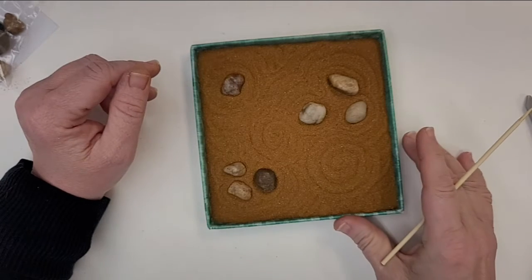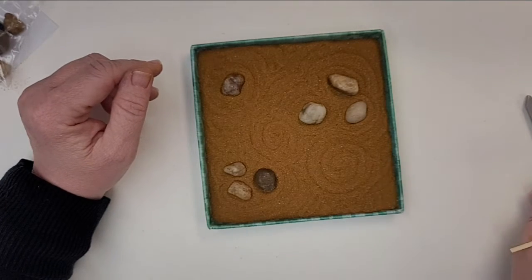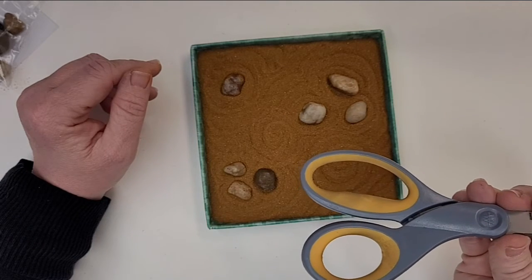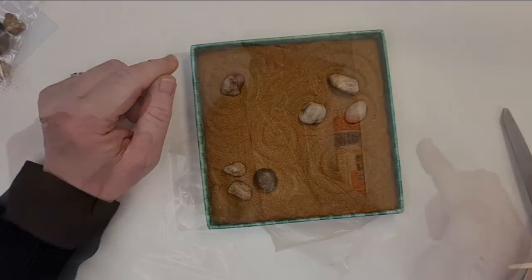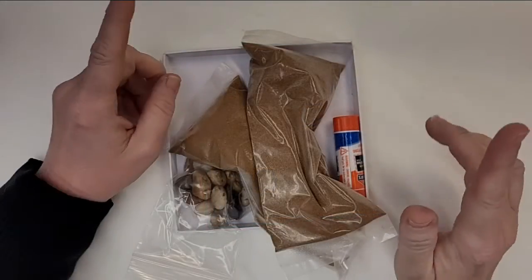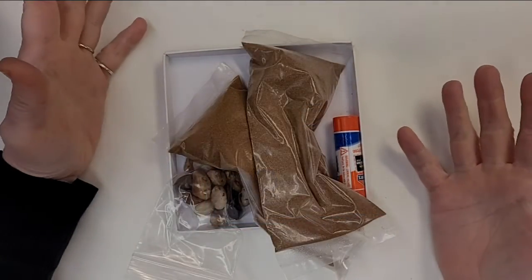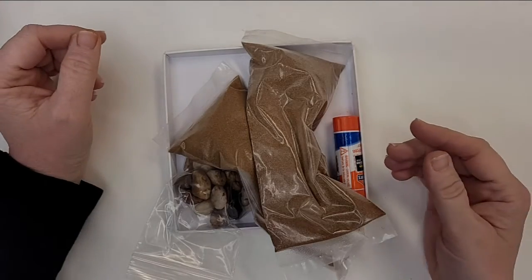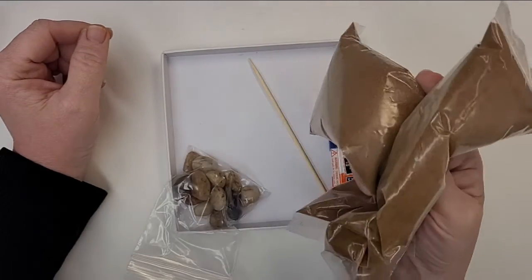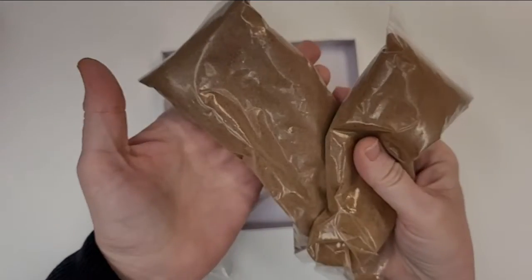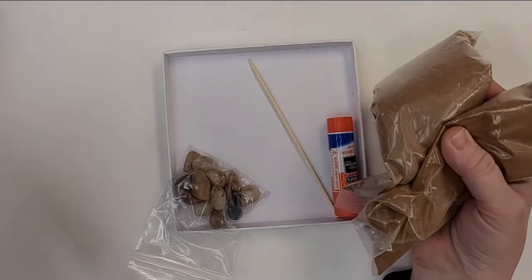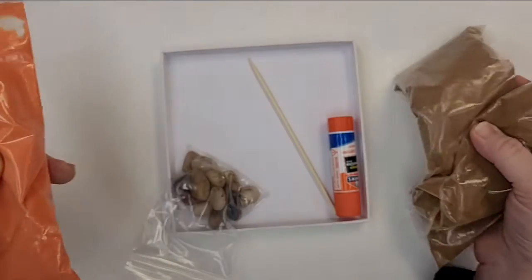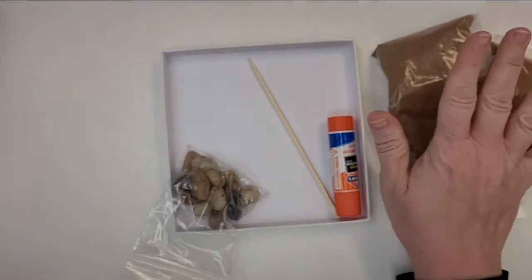Everything you'll need is going to be in the craft kit. You will need a pair of scissors though. Let's get started. So what's in the kit or what you'll need to get if you're doing this at home is some sand. I used brown colored sand from the craft store. You can use fancy colored sand, any kind of sand you want.